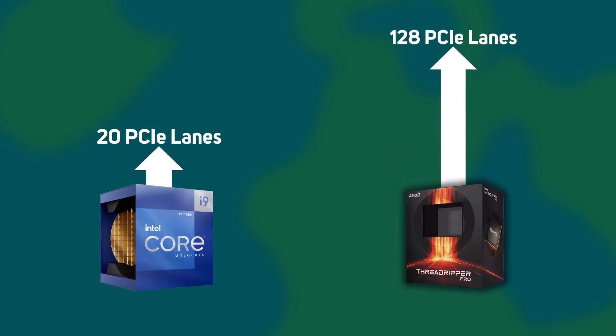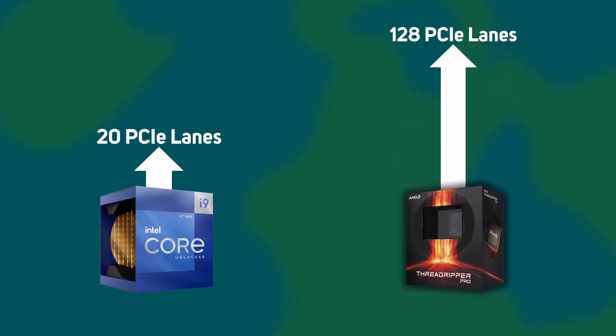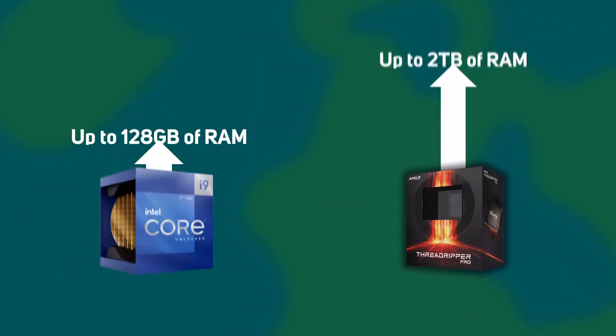Threadripper Pro CPUs have far more PCIe lanes than Core i9 CPUs — a massive 128 versus just 20 — meaning a Threadripper Pro workstation can support as many as 6 GPUs versus just 2 in a Core i9 workstation. Even if your applications don't benefit from a ton of CPU cores, having 6 GPUs gives you data center-like performance at the convenience of your desk. Those extra PCIe lanes can also be used for plugging in ultra-fast NVMe SSDs, high-bandwidth network cards, and hardware RAID controllers.